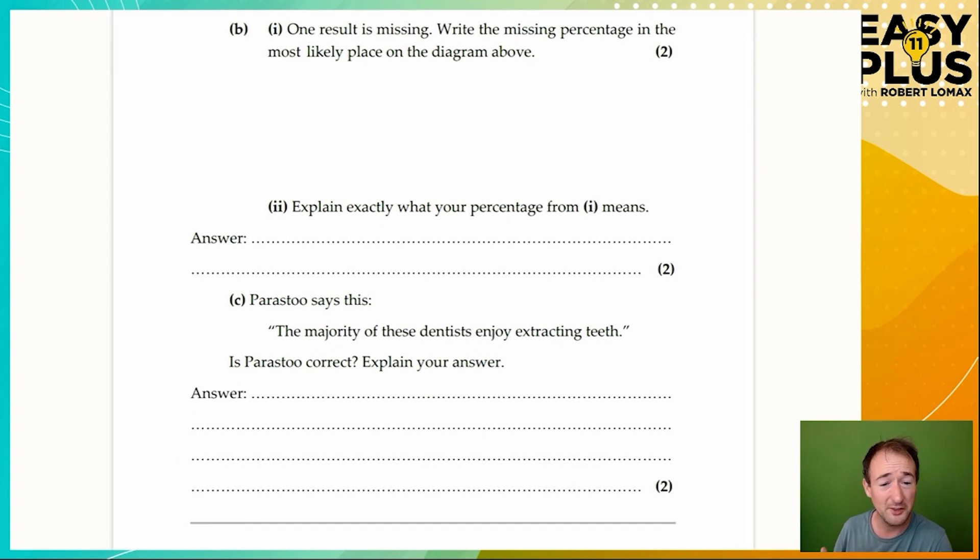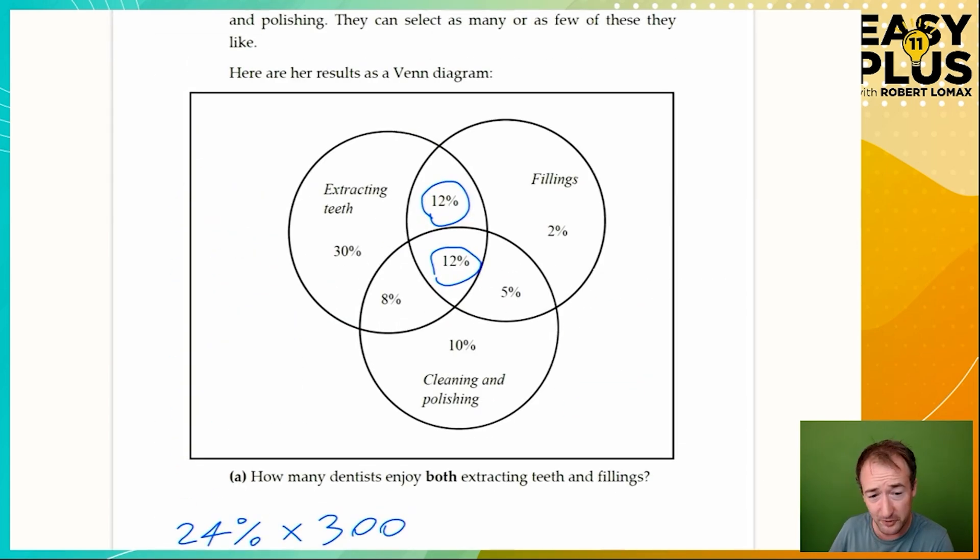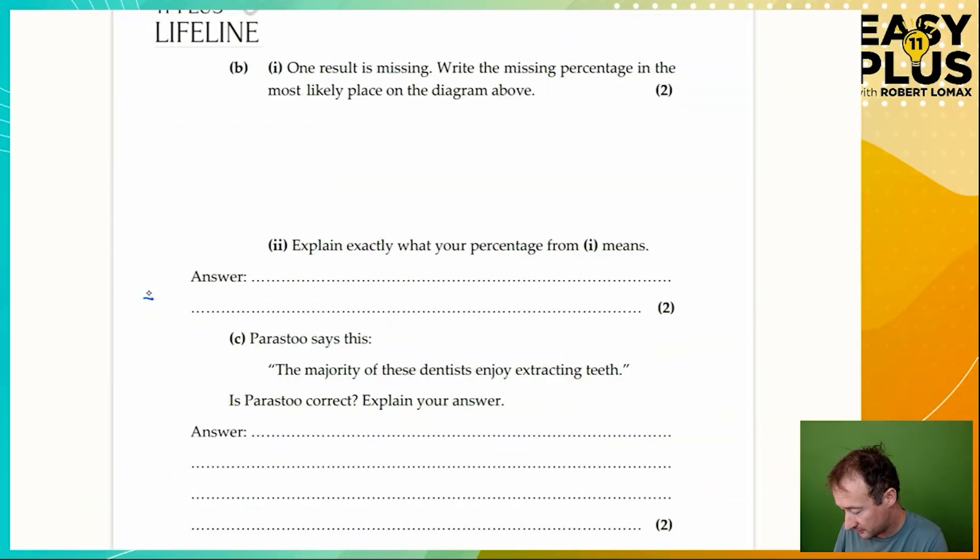One result is missing. Write the missing percentage in the most likely place in the diagram. We can see that all the spaces within the circles are filled in, but perhaps there's room for something outside. Let's add up our percentages: 12 and 12 is 24, plus 30 is 54, plus 8 is 62, plus 10 is 72, plus 5 is 77, plus 2 is 79. That's 79 out of 100, so we need another 21%. And we can write that in there or anywhere in the box that is outside the circles. 21% of dentists did not choose any of the three options.